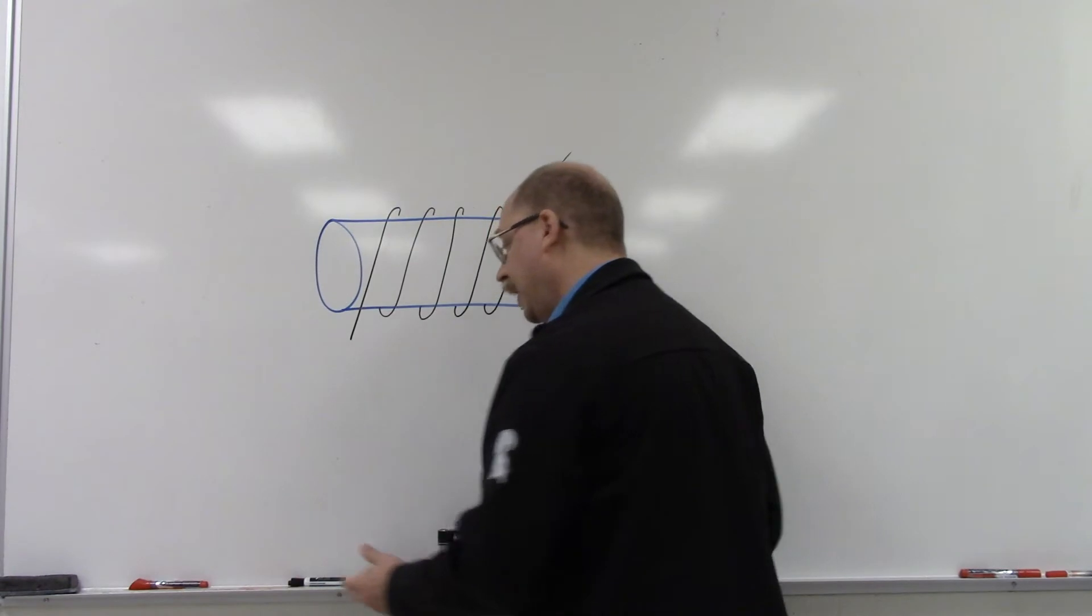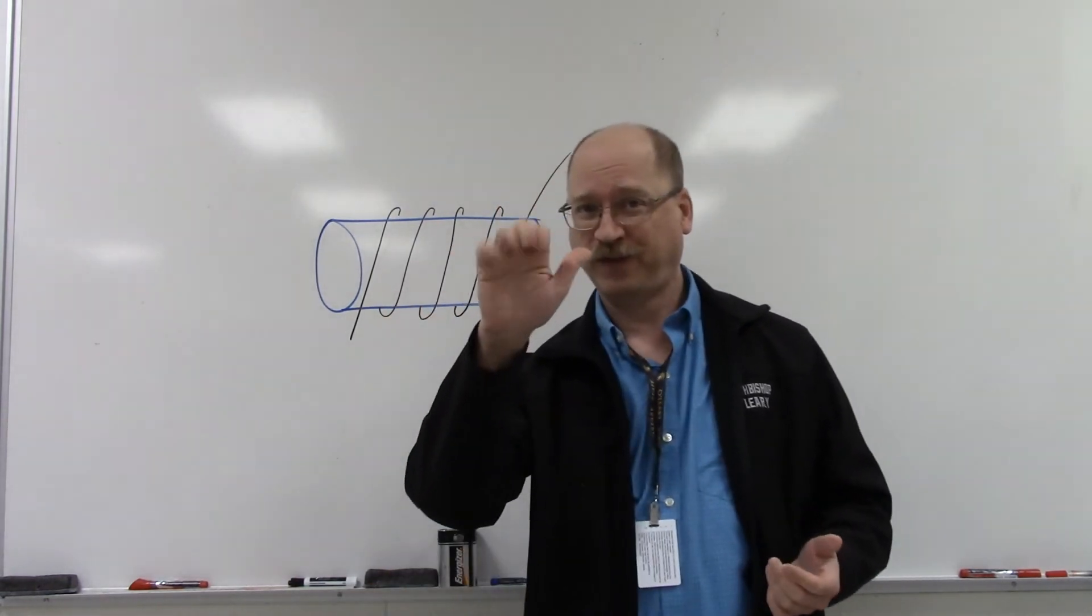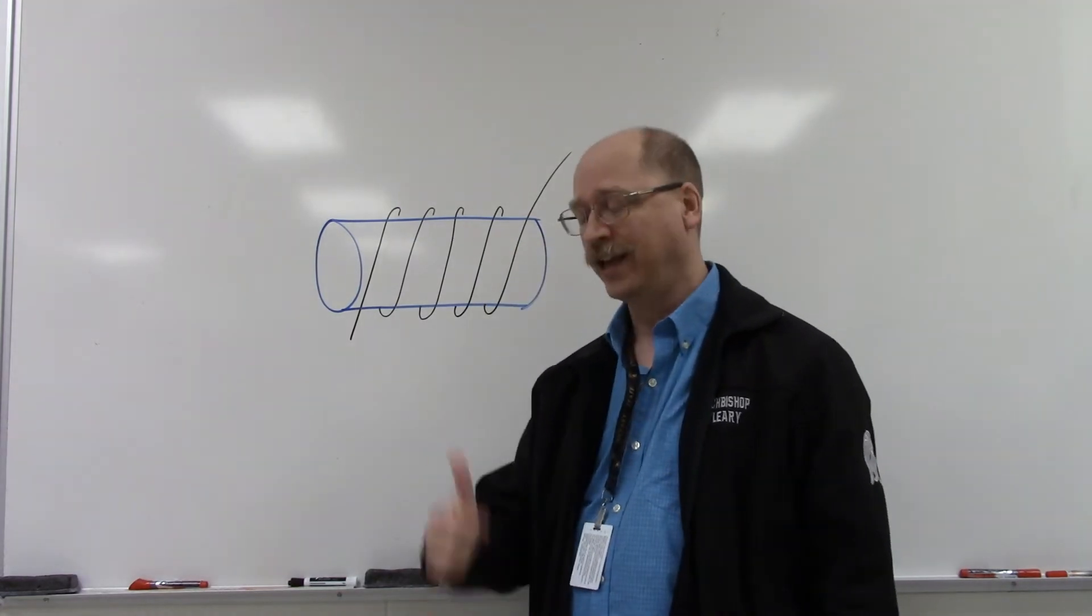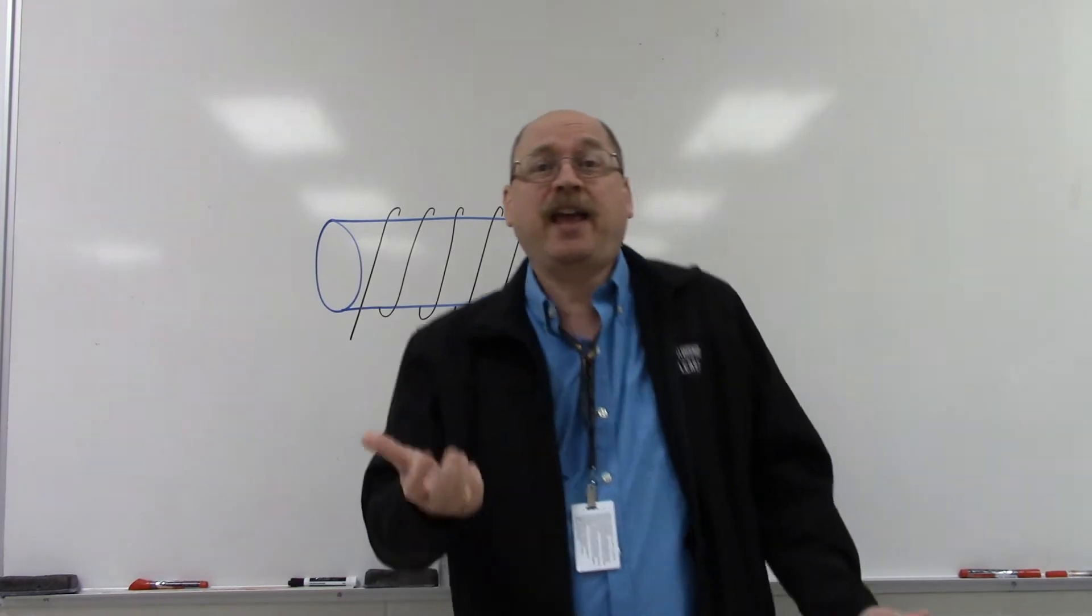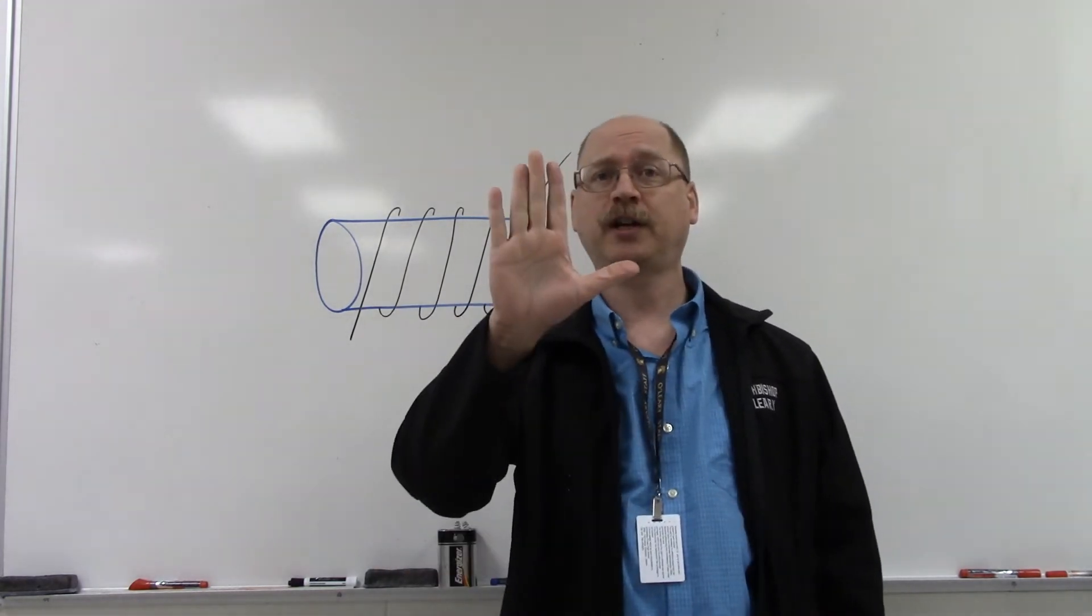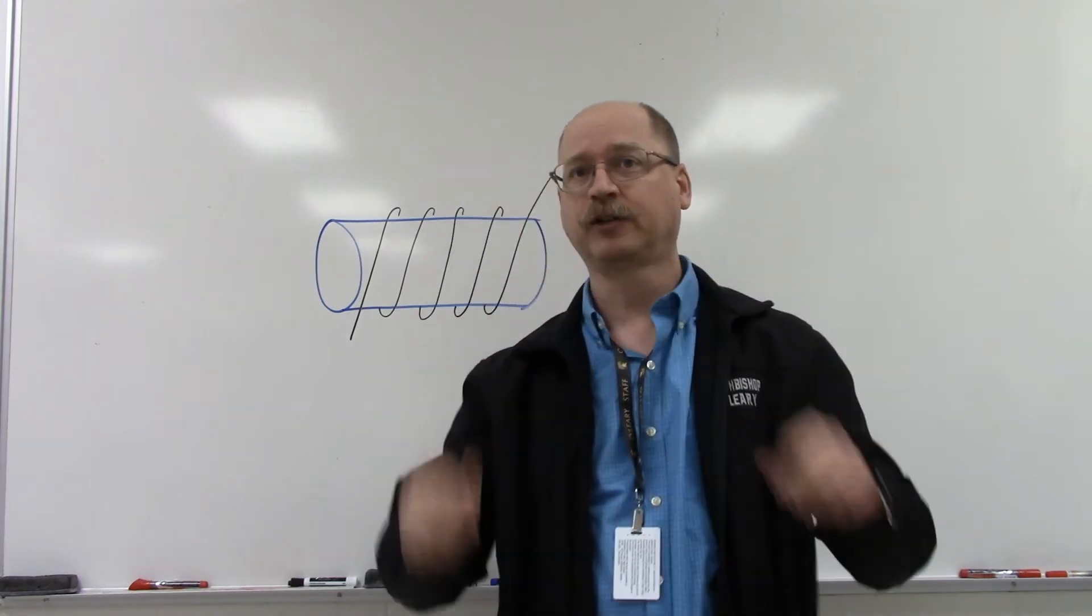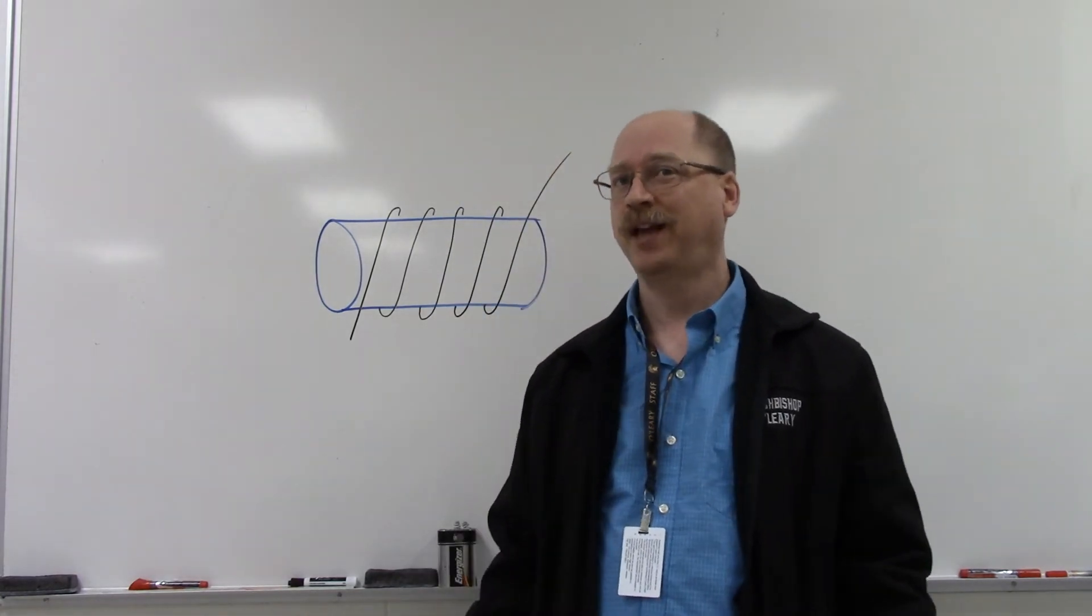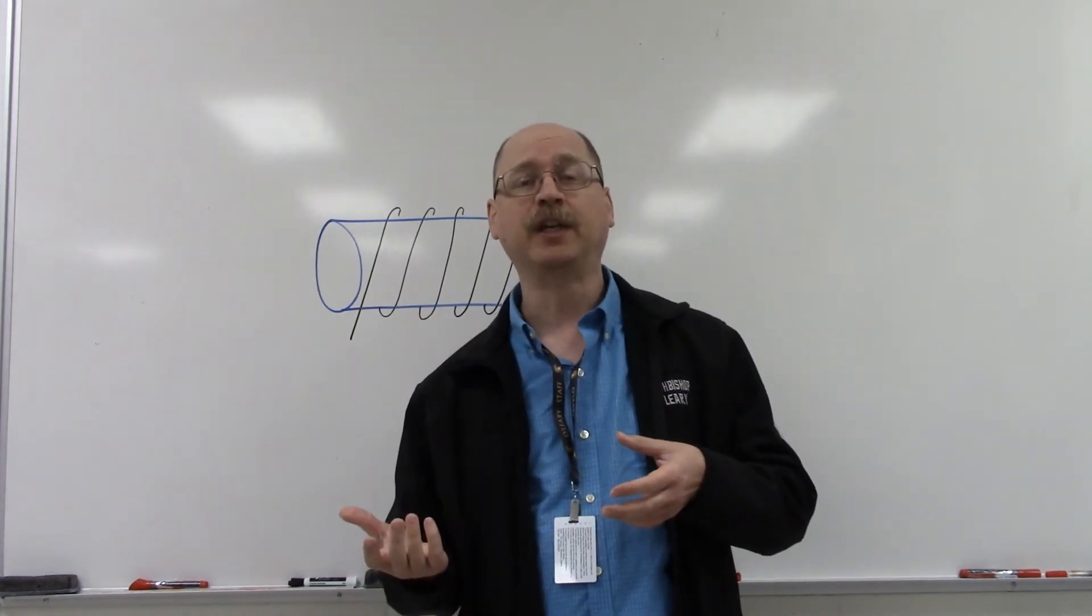So in the second hand rule, we do have to change things around a little bit because our fingers are what do the coiling and our thumb is what points in a particular direction. And in any of the hand rules, we're always trying to keep it so that fingers and thumb are perpendicular to each other because that's what happens in all of these hand rules. It's what's happening between the direction the current is flowing and the magnetic field that we induce.